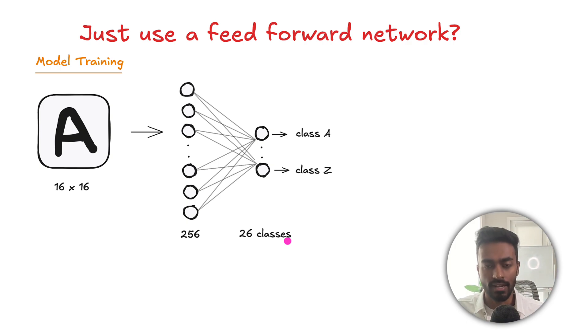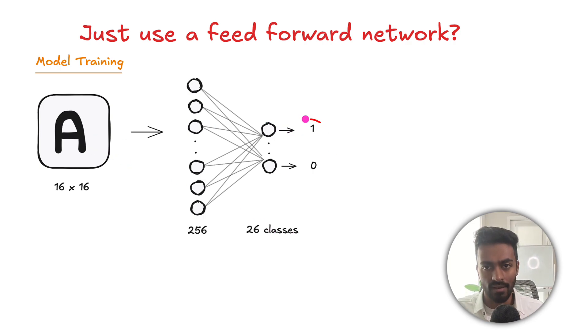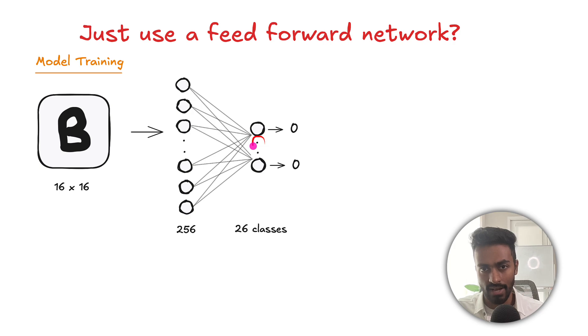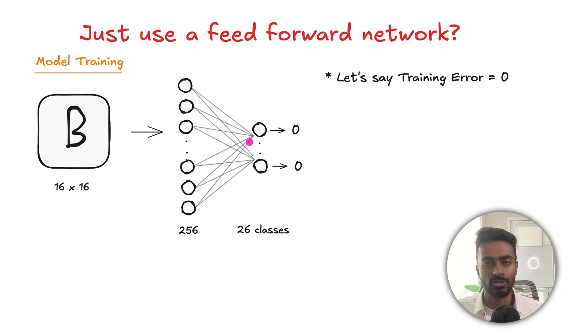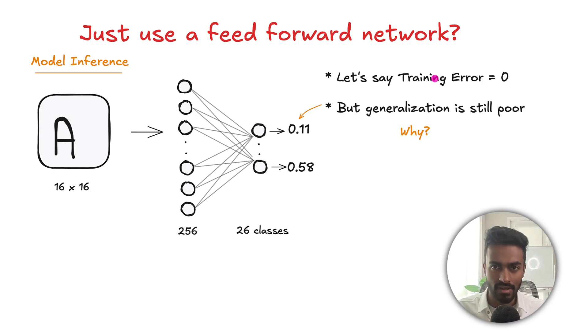Now during the model training phase let's say that we continuously pass these samples in. So maybe for this first sample we'll see that we have a prediction of 1 for class A. Then over here there's going to be another neuron for class B that would be 1. And at this point let's just say that the training error that we get from training this model is 0. Now this sounds good but we notice that the generalization error is still poor. So if we pass in an unseen example we're going to see that maybe the recognition of A is 0.11 but that of Z is 0.58 which is a poor prediction. So why is generalization still poor here?